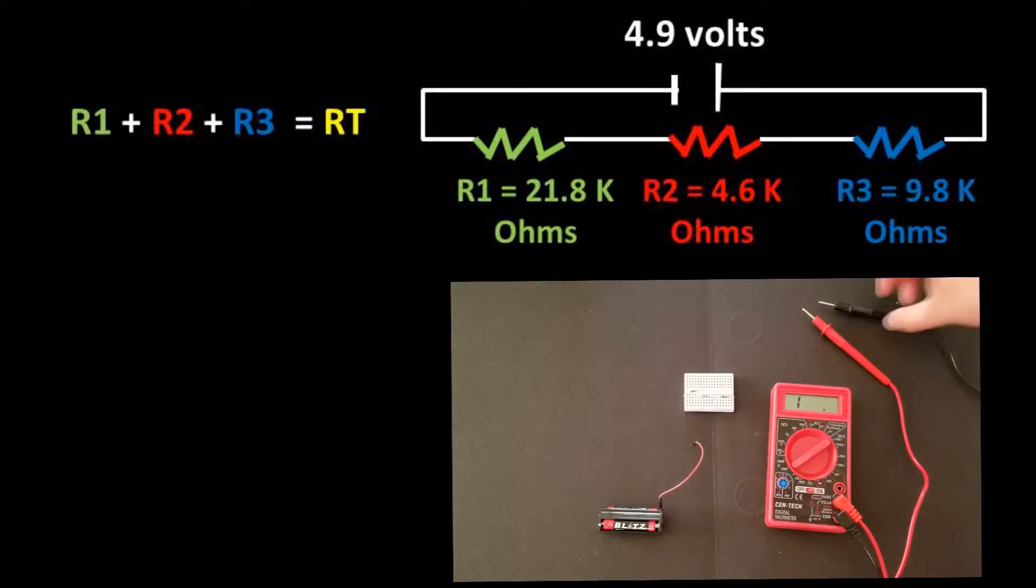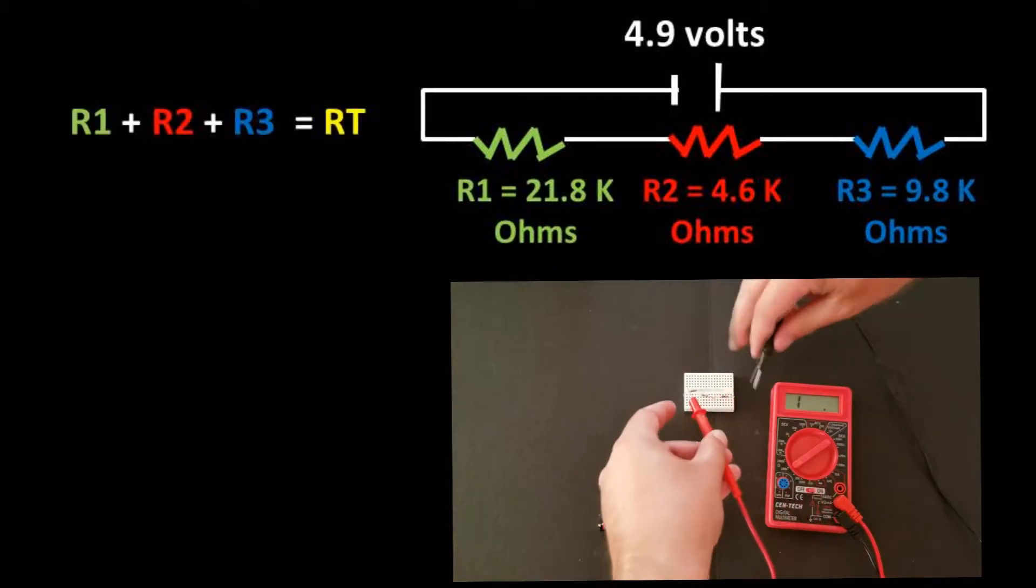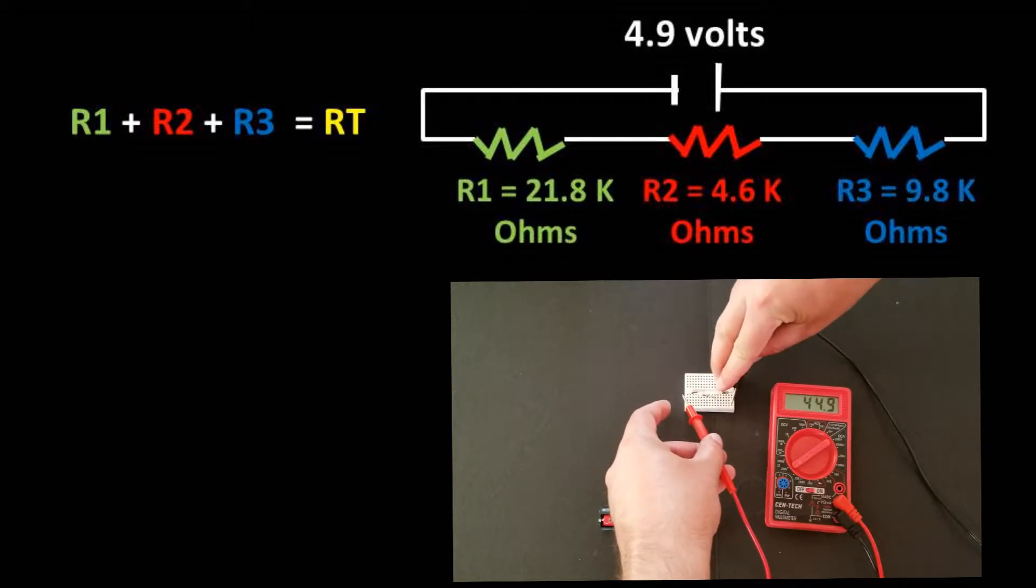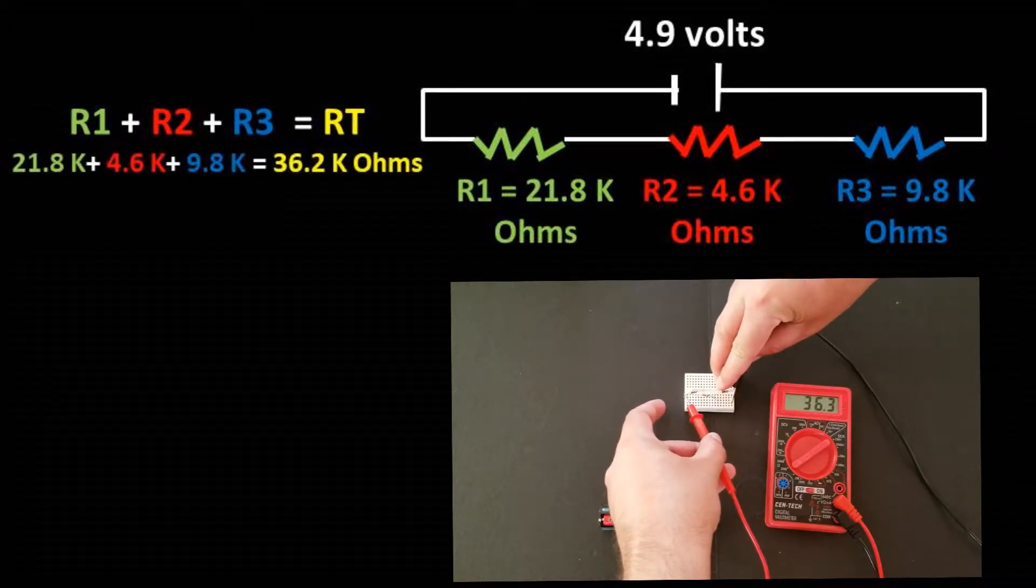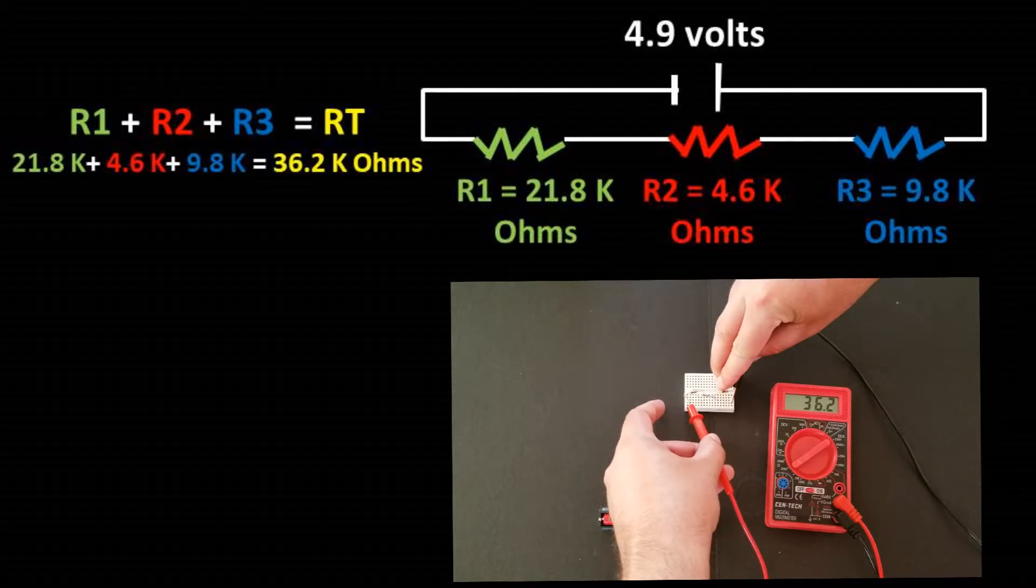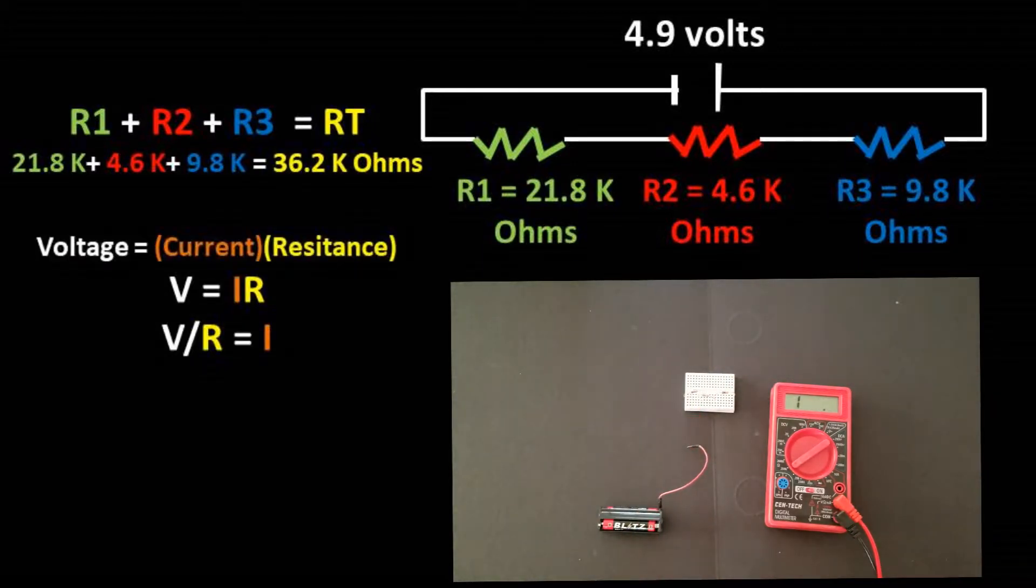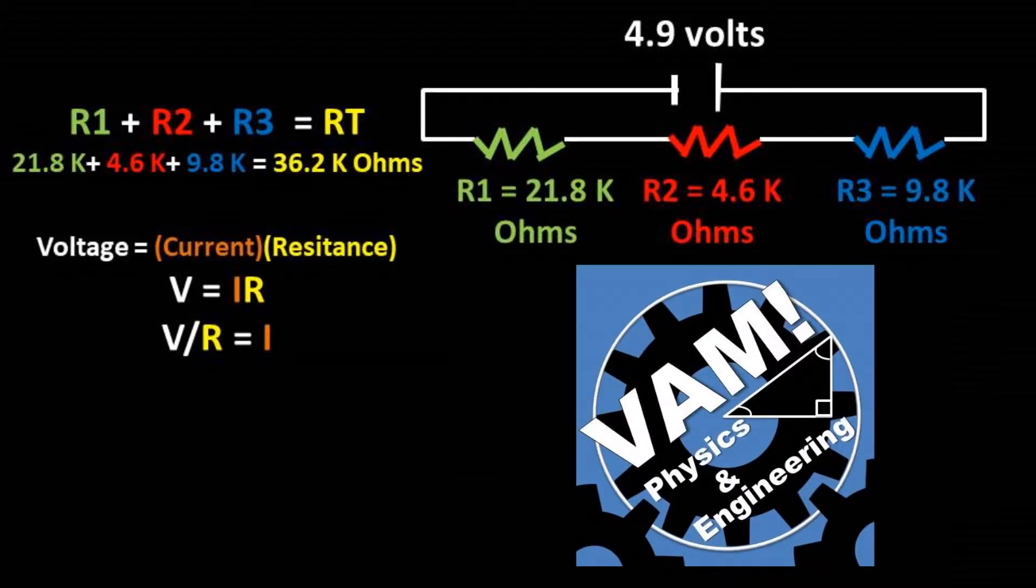Now in series circuits, we can add up the resistance of each resistor to get the total resistance of the circuit. We get a total resistance of 36.2 kilo ohms. Now we can use the formula voltage equals current times resistance, or in other words, V equals IR.